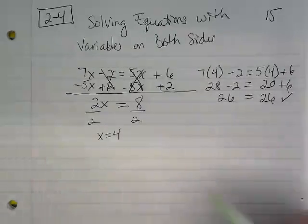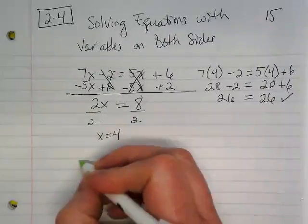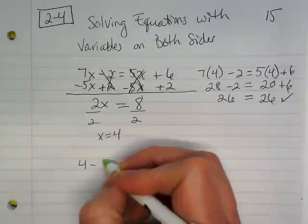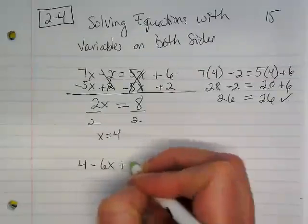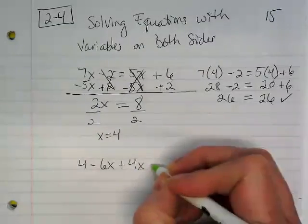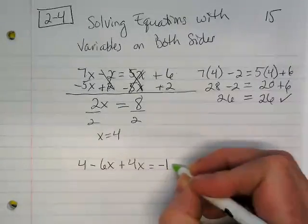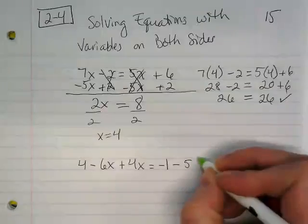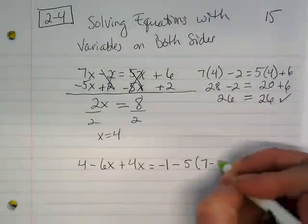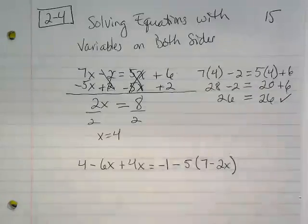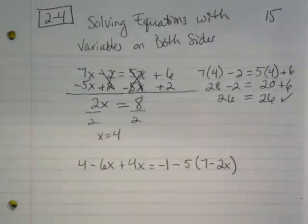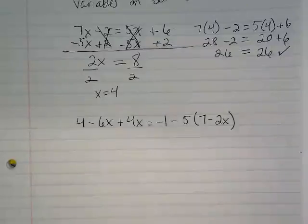How about if we do this example? 4 minus 6x plus 4x equals negative 1 minus 5 times 7 minus 2x. Not quite as simple as our first one where we just had two terms on each side. This time, we have to do some simplifying on both sides of the equation before we can start solving for the x.